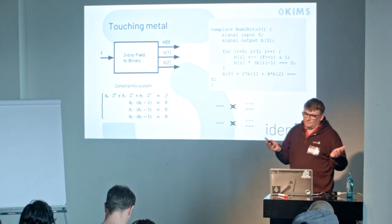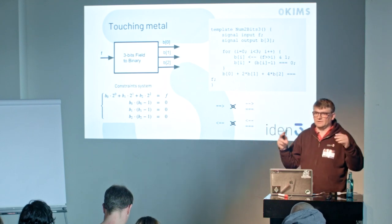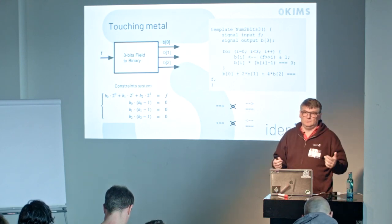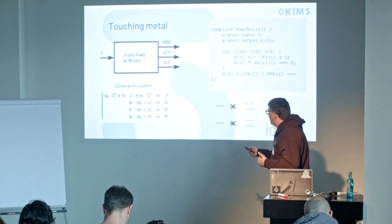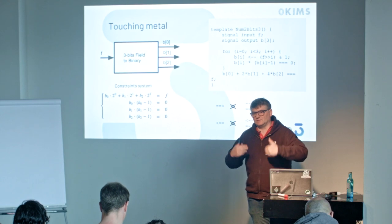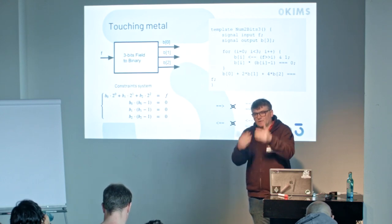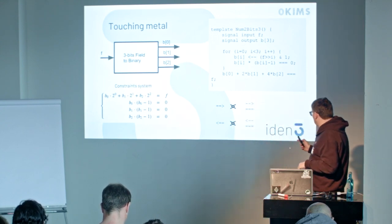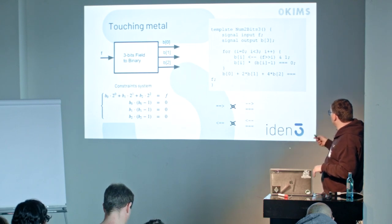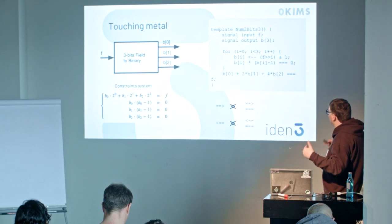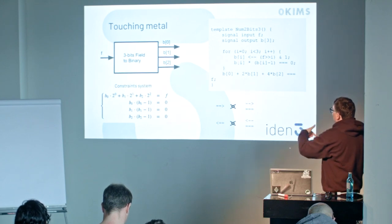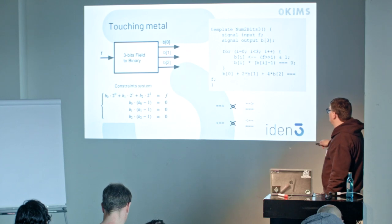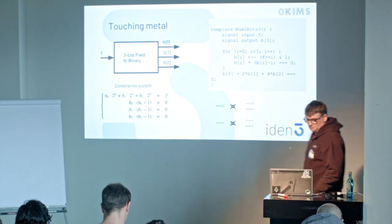CIRCOM has two compilation rounds. The first constructs the constraint system. The second generates code to compute all the intermediary signals — it runs the witness generation circuit that computes all the intermediate signals. So the circuit is executed two times: once to generate the constraints, and once when calculating the witness, to compute how you calculate those intermediate signals.